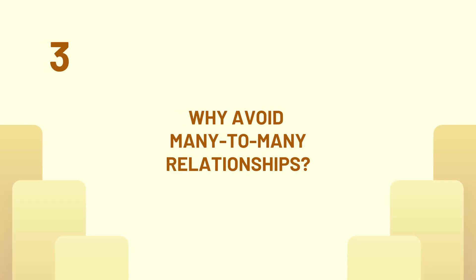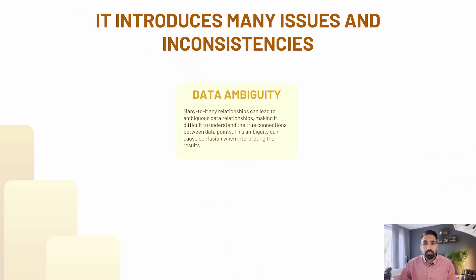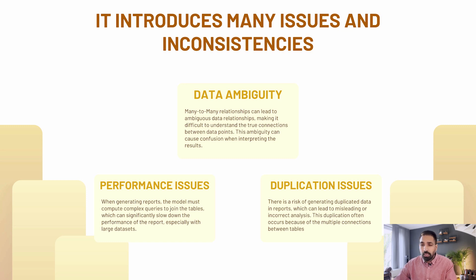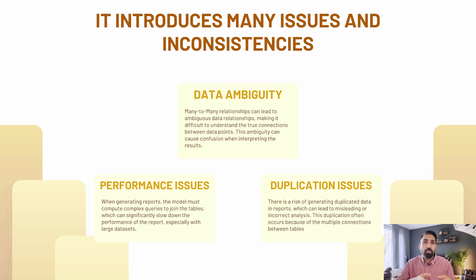Now let's discuss why you should avoid many-to-many relationships in your data model. It's not always mandatory to avoid it, but there are consequences: data ambiguity, performance issues, and duplication of data. I'll explain through the demo exactly how ambiguity occurs when you have a many-to-many relationship.